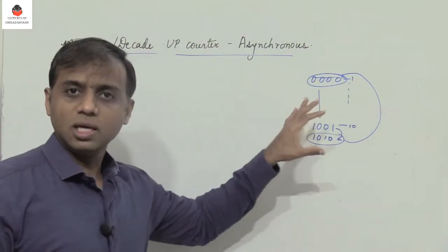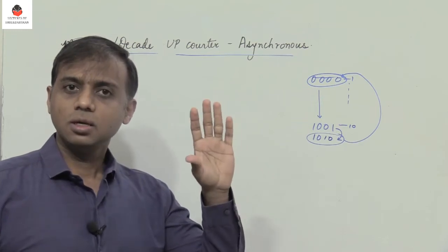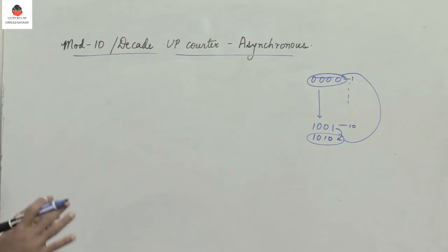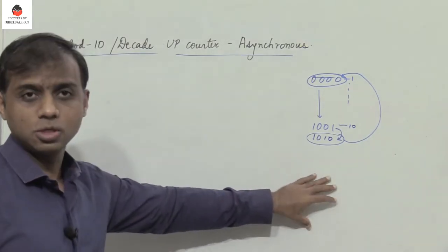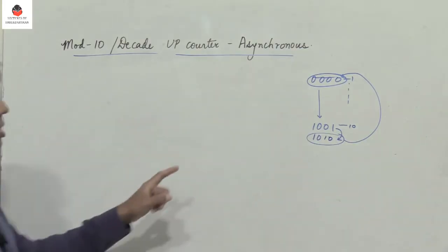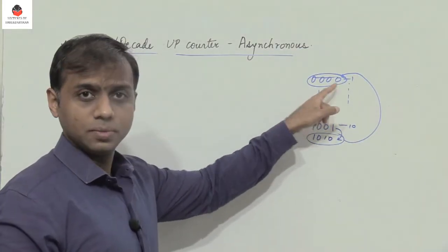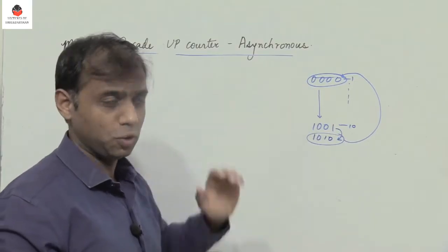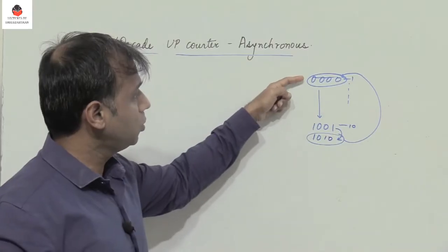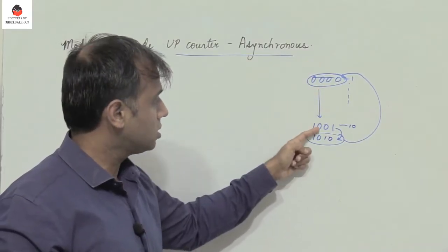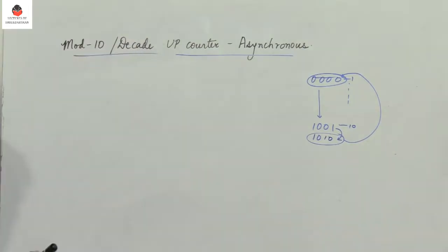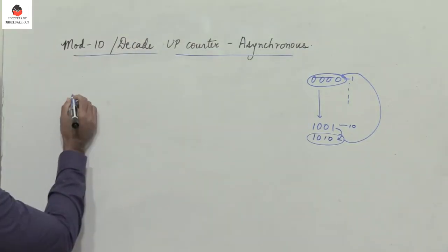In order to design this using JK flip-flops, let us first use a four-variable K-map to simplify and get the logic which has to be used to connect the four JK flip-flops. Since we have four bits, we need four flip-flops and the outputs have to be connected so the count moves from 0000 to 1001 and then comes back to 0000.